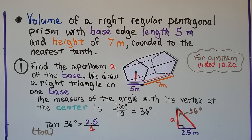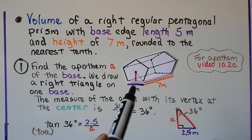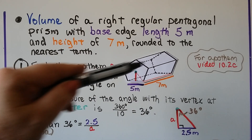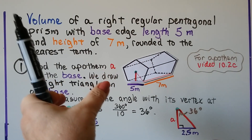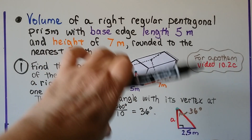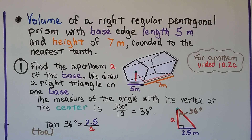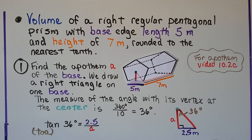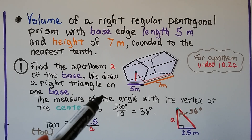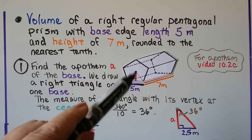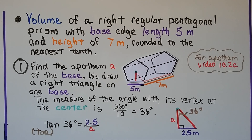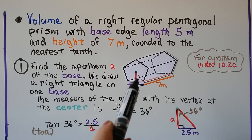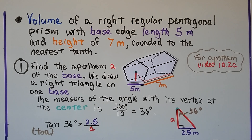For the volume of a right regular pentagonal prism with a base edge length of 5 meters and a height of 7 meters — this is shown laying down, but 7 meters is still the height. The first thing we do is find the apothem A, which we covered in section 10.2c. We draw a right triangle from the center to the base, and that dark red line is the apothem A.